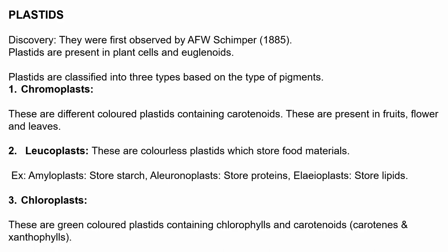Plastids are classified into three broad classes: chromoplast, leucoplast, and chloroplast. Chromoplasts are differently colored plastids containing carotenoids, present in fruits, flowers, and leaves. Leucoplasts are colorless plastids whose main function is to store food materials. Examples include amyloplasts, which store starch; aleuronoplasts, which store protein; and elaioplasts, which store lipids.